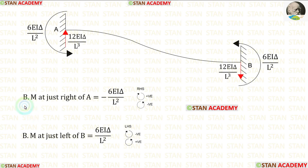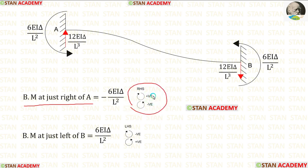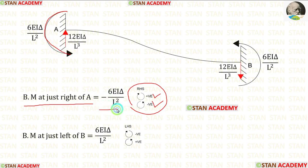The bending moment at just right of A can be found easily by using the right-hand side rule: clockwise will be positive and anticlockwise will be negative. MA is acting in the anticlockwise direction. So, it will be negative.